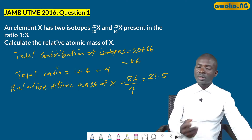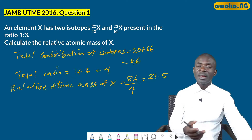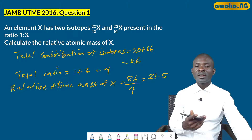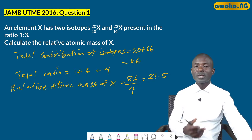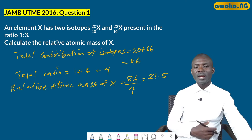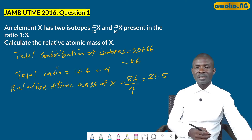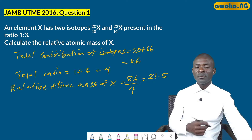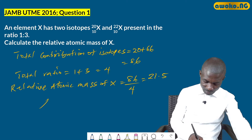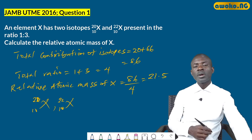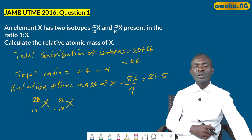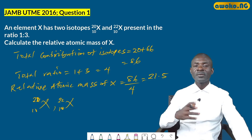It is as simple as that. The relative atomic mass of an element can be calculated based on percentage abundance or based on the ratio in which the different isotopes exist. Isotopes share the same atomic number but different mass numbers, as shown by ²⁰X and ²²X. This concludes today's class on isotopes and relative atomic masses.